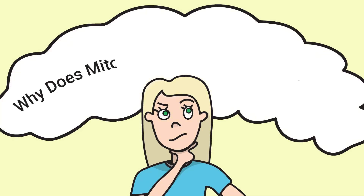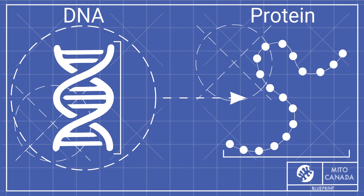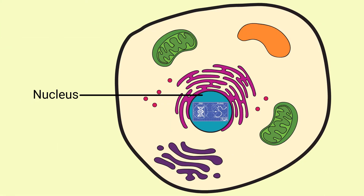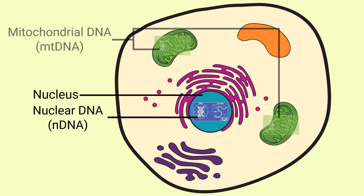Why does mitochondrial dysfunction happen? Your cells have blueprints of all the things they need to make, called DNA. These blueprints are located in the cell's nucleus, or control center, and are called nuclear DNA. While nuclear DNA provides the general instructions for everything made in a cell, the mitochondria also have their own special set of instructions, called mitochondrial DNA.